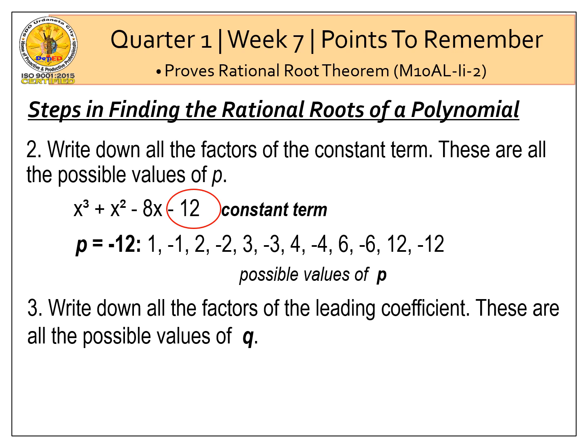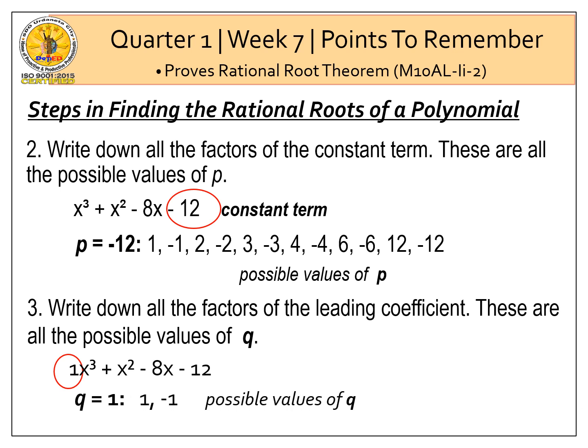The third step is to write down all the factors of the leading coefficient — these are all the possible values of q. Using the same polynomial, 1 is our leading coefficient. So q is equal to 1, and the factors of 1 are 1 and negative 1. These are the possible values of q.